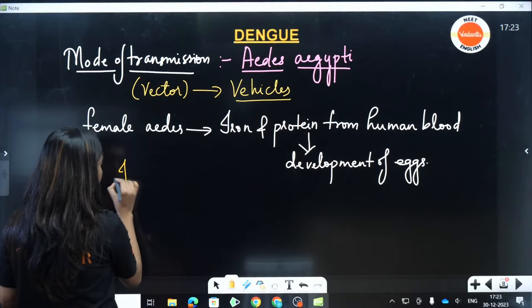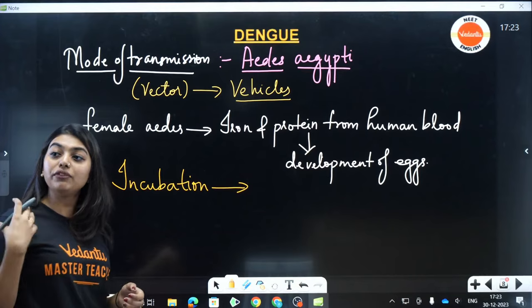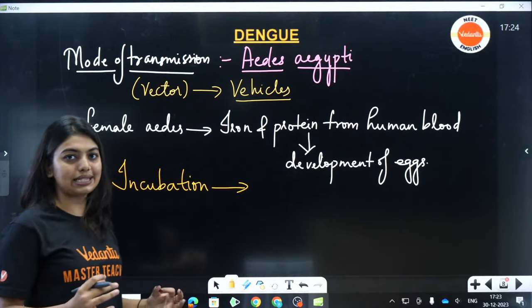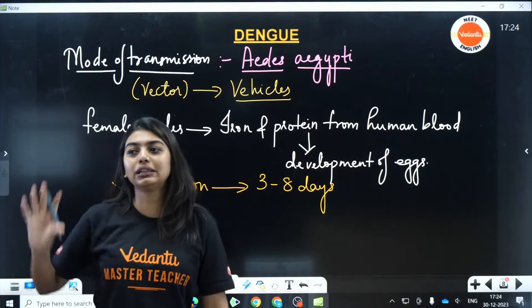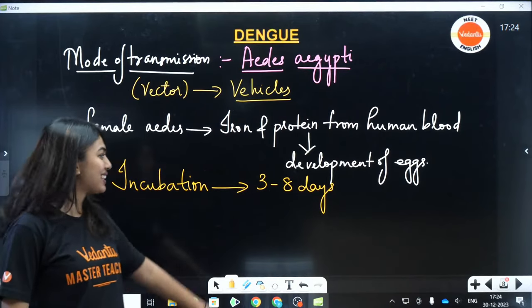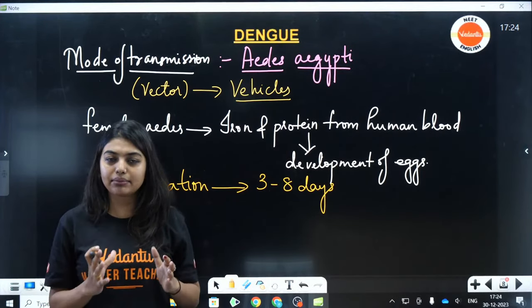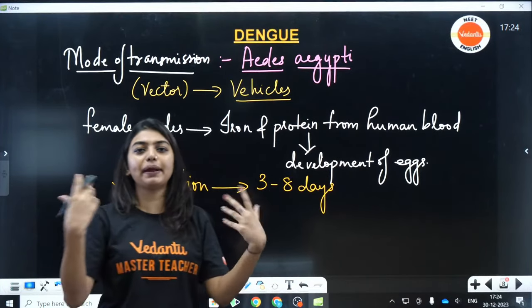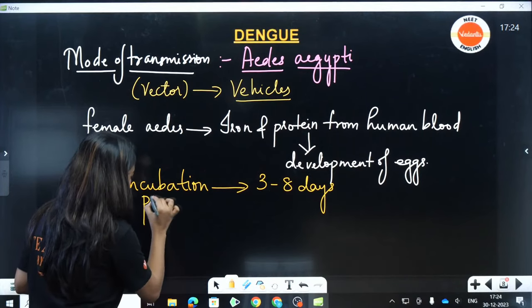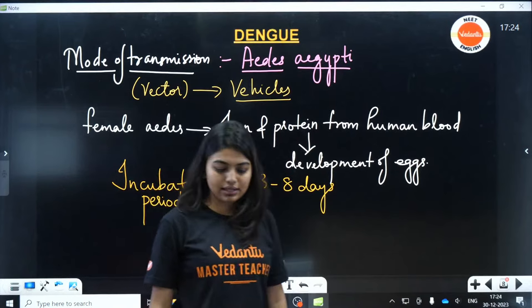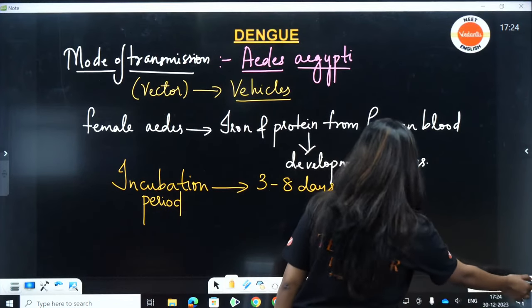What is the incubation period? That means within how many days will we know we have Dengue? It is around 3 to 8 days — and in some places you can also see 3 to 13 days. It can go up to 13 days. Once you are bitten by an infected Aedes aegypti, you can see symptoms within 3 to 8 days, even up to 13 days, depending on each person's body mechanism. This is your incubation period — direct questions can come from this.